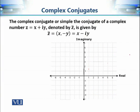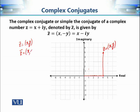What is the geometrical meaning of the conjugate? If z corresponds to the point (x, y), then its conjugate corresponds to (x, −y). The x-coordinate is the same, but the sign of the y-coordinate is changed — instead of going in the positive direction, we move the same distance in the negative direction. So z̄ is the reflection of z across the real axis.